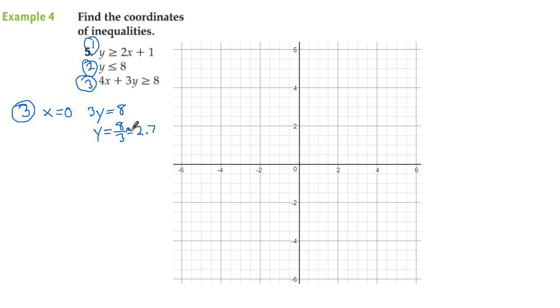Maybe we'll put a little squiggly line to make that approximate. And then we'll set y equal to 0. With y equal to 0, we'll set 4x equal to 8. And that gets us a little bit more of a straightforward number that we were hoping for, x equals 2.